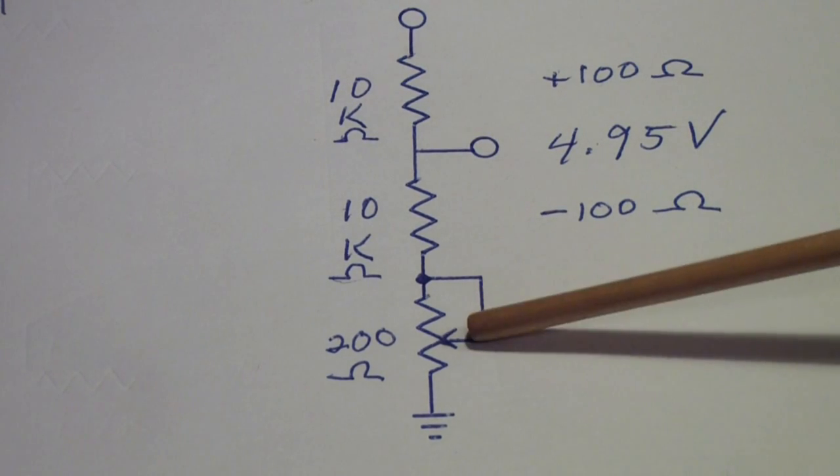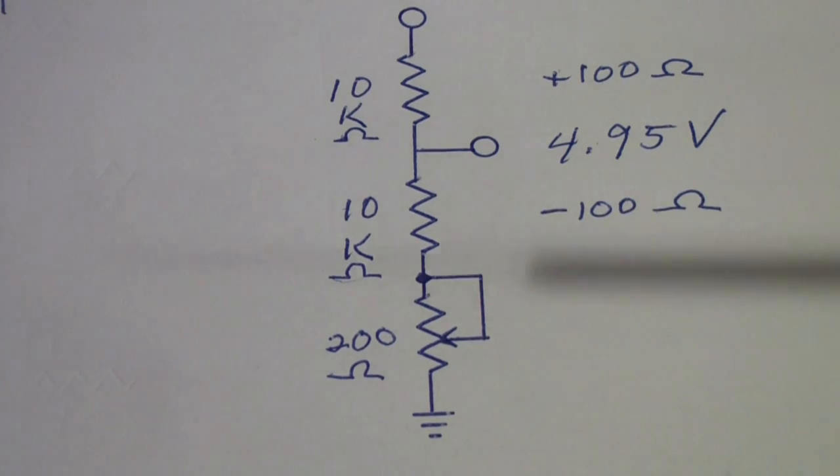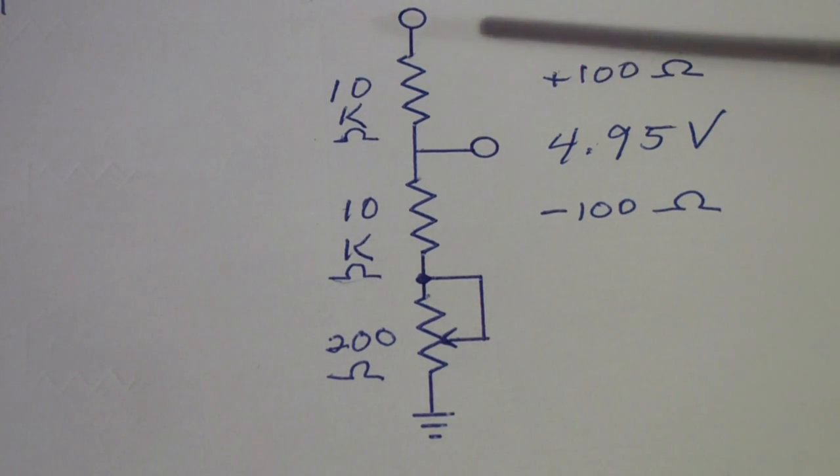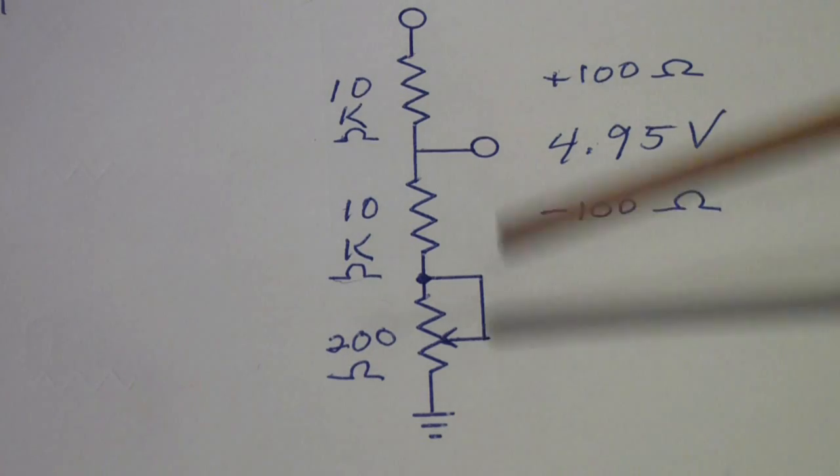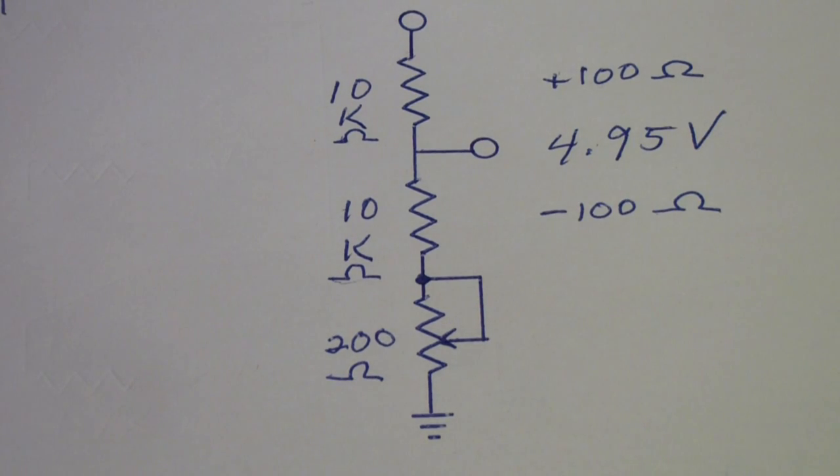This was necessary not just for kit scopes like the Heathkit, but also for factory manufactured scopes, because, among other things, over time, resistor values would drift. So, let's look at a little bit at that and how that might go about being calibrated.